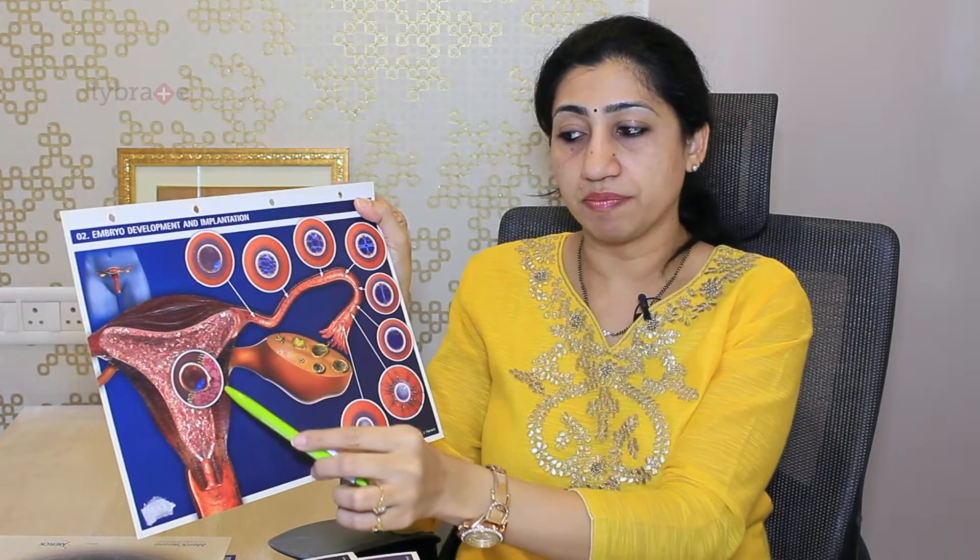What happens mainly is a blood connection forms between the uterus and the embryo — that is how nutrients from the mother's body are transferred to the embryo so it grows further and establishes a pregnancy. When couples conceive, these are the things which have to happen naturally. When they do not conceive after trying for more than a year after marriage, that is when we evaluate for problems — and evaluation depends on all the steps I have described.